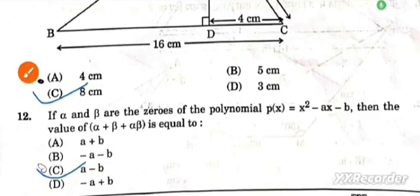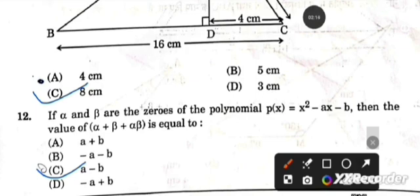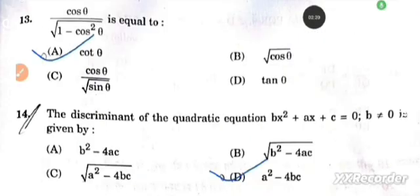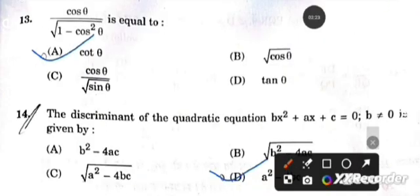Next question: If α and β are the zeros of the polynomial, then the value of α + β + αβ is equal to a - b. Question number 13: cos θ / √(1 - cos²θ) is equal to cot θ.